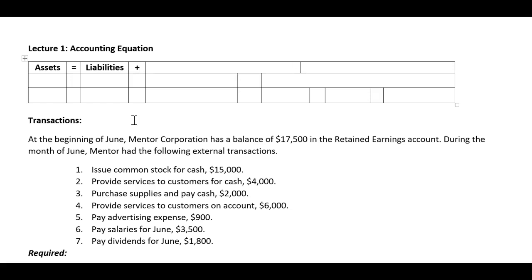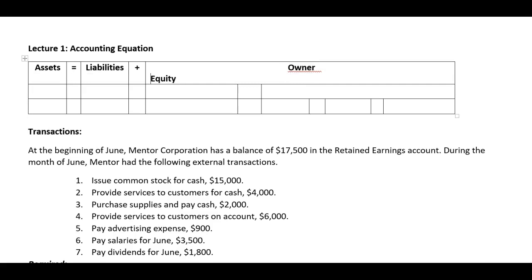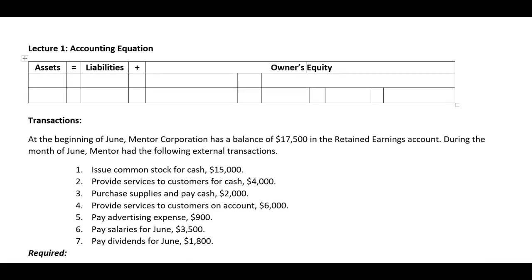So assets equals liabilities plus equity. Now, depending on the type of business, you can have owner's equity, which would be like a sole proprietorship — a business structure where you have one owner who is not legally separate from the company. Then you've got partnership equity, for a partnership where two or more people start a company. Partnerships are also not legally separate from their owners. Now, what we're going to focus on is stockholders' equity, or shareholders' equity, and that's for corporations. The reason we focus on corporations is because those are the ones legally bound by GAAP — generally accepted accounting principles — and must report to the SEC if publicly traded.